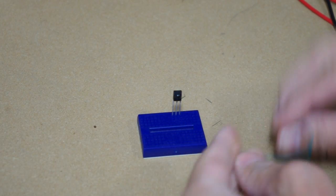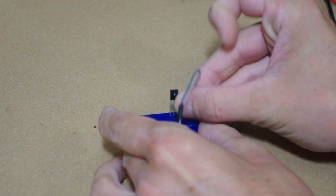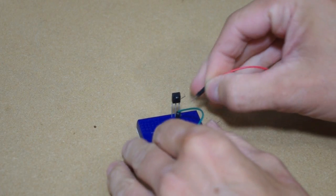With the IR demodulator that I have, the middle pin is the ground. It's pin number two, and that's with the little bump facing you.